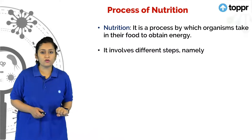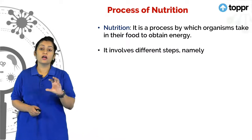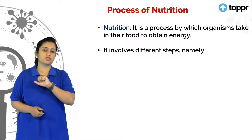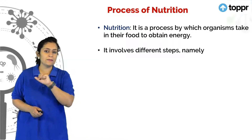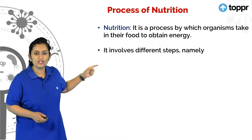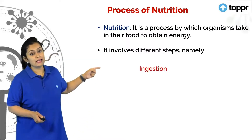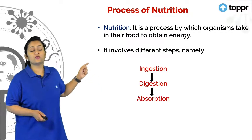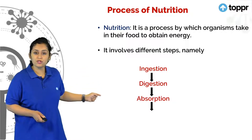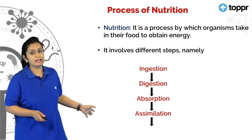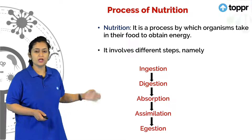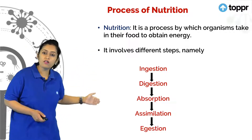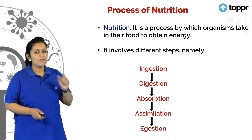So how many steps are involved? There are about five steps involved in the process of nutrition, namely ingestion, then digestion, after digestion it goes for absorption, assimilation, and finally ejection. We are going to discuss all five steps one by one.